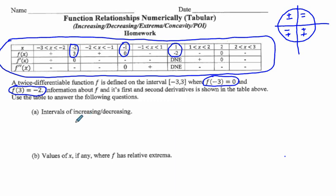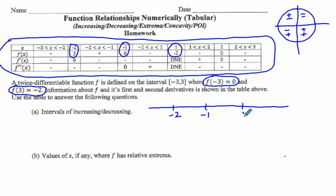The first thing we're asked is: what are the intervals of increasing and decreasing? My recommendation is to draw a number line and place our critical numbers on it, which are given as, going left to right: negative two, negative one, one, and two. On the extremities we have negative three on the left and positive three on the right. Above this number line we put f prime, and below we put f.